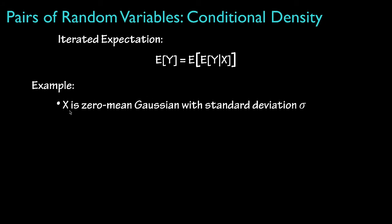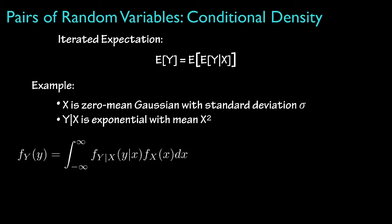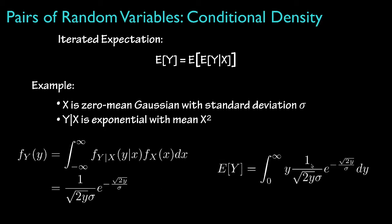As an example, let's suppose that x is a zero-mean Gaussian random variable with a standard deviation equal to sigma. Then conditional on x, y is an exponential random variable with a mean equal to x squared. Using the exponential density for the conditional density for y given x and the Gaussian density for x, we could evaluate the marginal or unconditional density for y, which evaluates to 1 over the square root of 2 times y times sigma times e to the negative square root of 2 times y divided by sigma, with range over the non-negative real numbers.